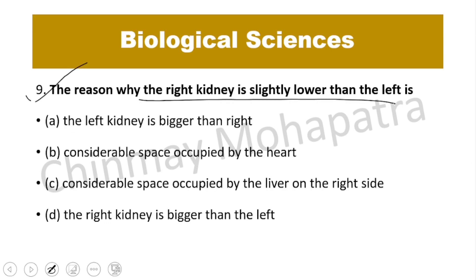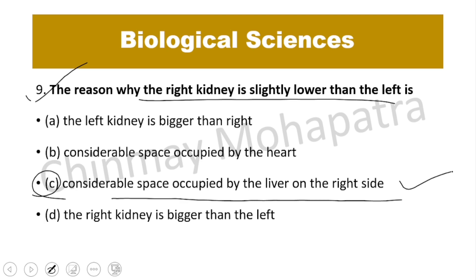Question number 9: Why is the right kidney slightly lower than the left kidney? The left kidney is wider and short, while the right kidney is longer and narrow.